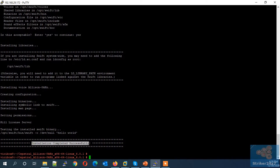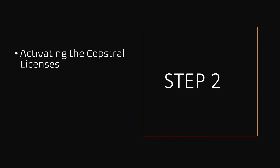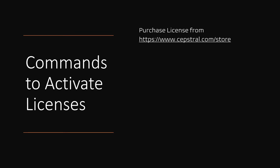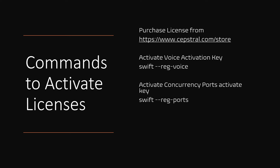Kaptrel has now been installed. Step 2: Activating the Kaptrel licenses for voice, concurrent ports, and save-to-file. First, purchase the necessary licenses from the Kaptrel store. Activate the voice license by typing swift --reg-voice. Next, activate the concurrent port license by typing swift --reg-ports. Finally, activate the save-to-file license by typing swift --file.